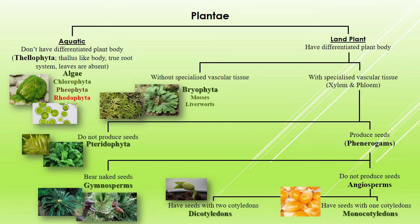Then we have to consider the number of cotyledons present in the seed. If the seed contains one cotyledon, that group of angiosperms will be included under monocotyledon. If the seeds contain two cotyledons, then that group of angiosperms will be included under dicotyledon. This five kingdom classification was proposed by Whittaker in the year 1969.